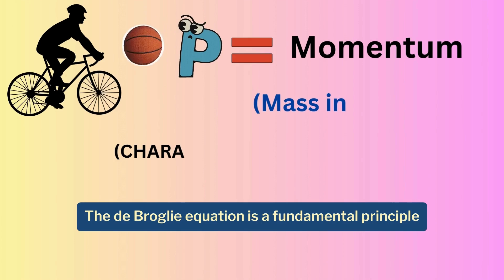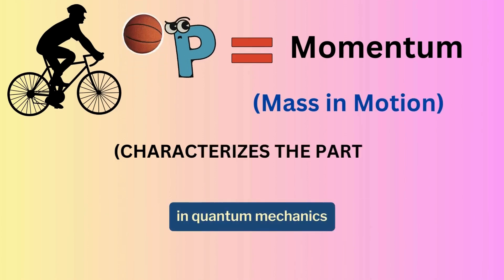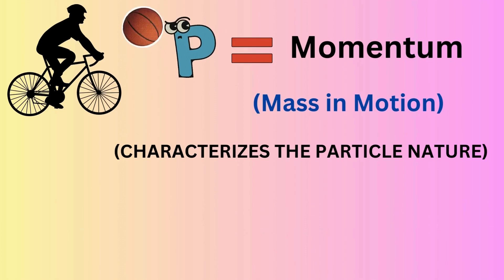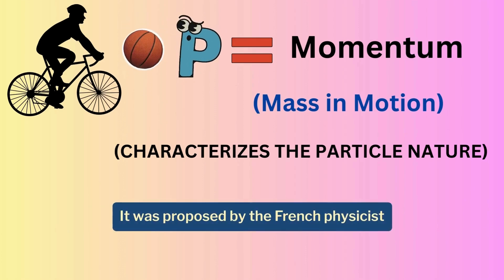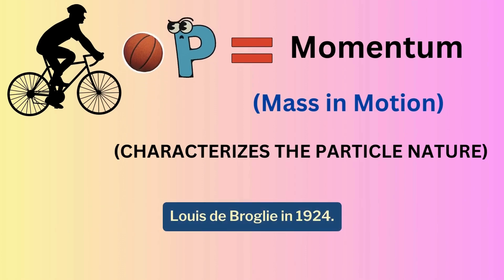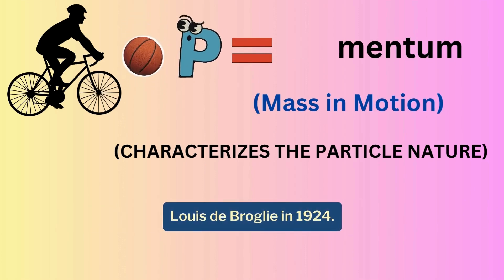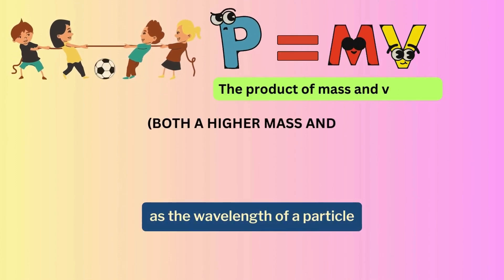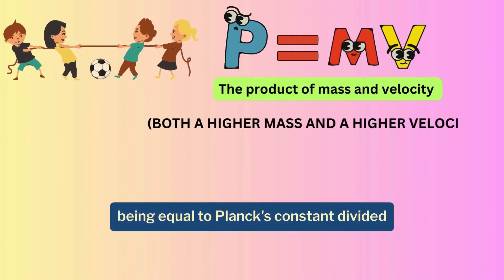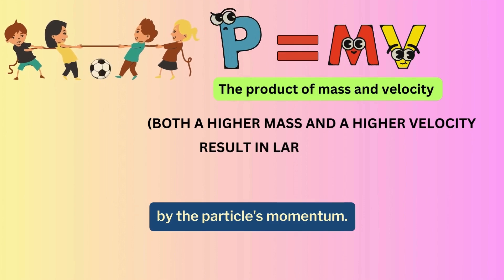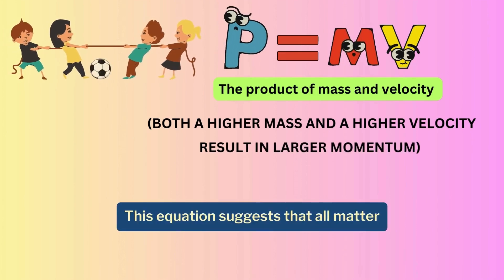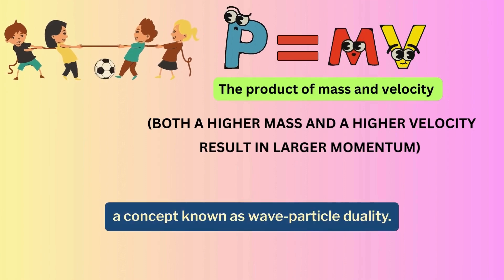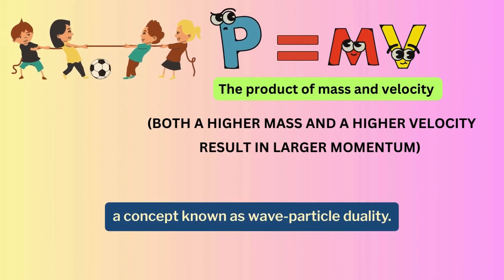The de Broglie equation is a fundamental principle in quantum mechanics that relates the wavelength of a particle to its momentum. It was proposed by the French physicist Louis de Broglie in 1924. The de Broglie equation is expressed as the wavelength of a particle being equal to Planck's constant divided by the particle's momentum. This equation suggests that all matter exhibits wave-like properties, a concept known as wave-particle duality.